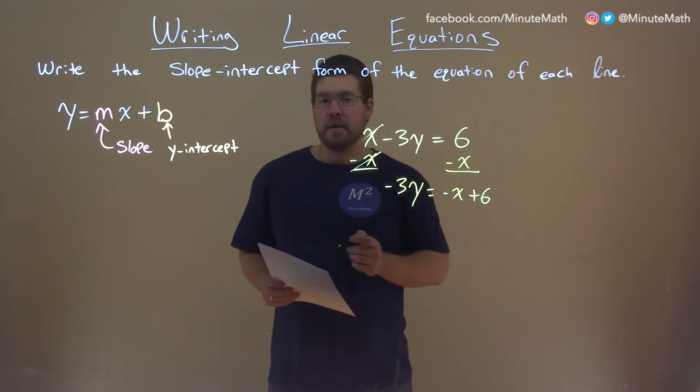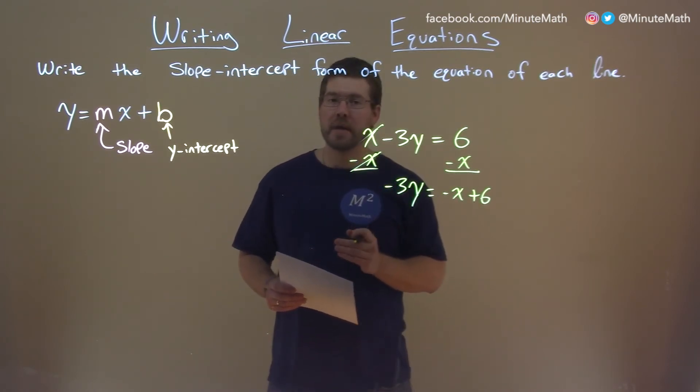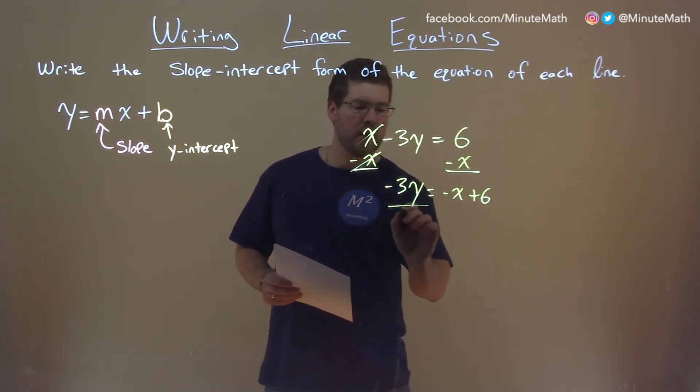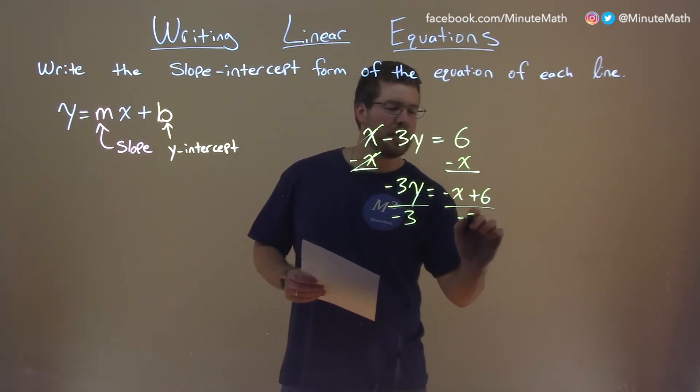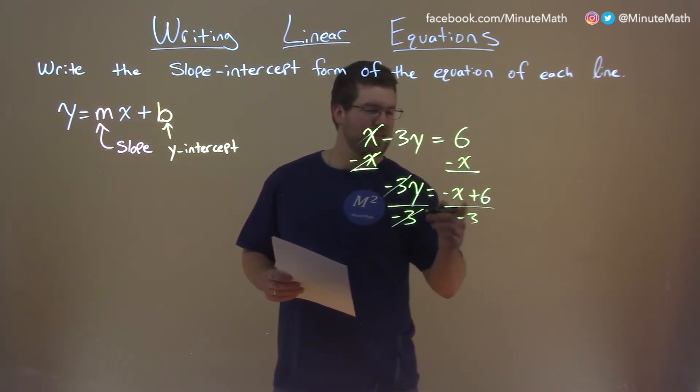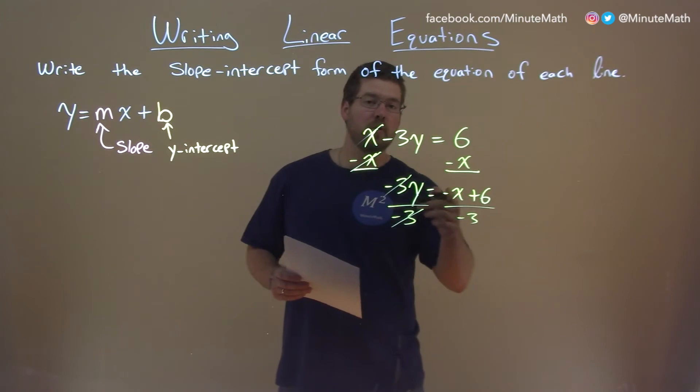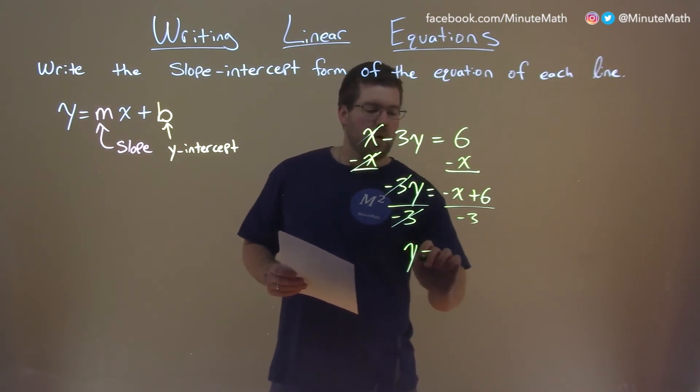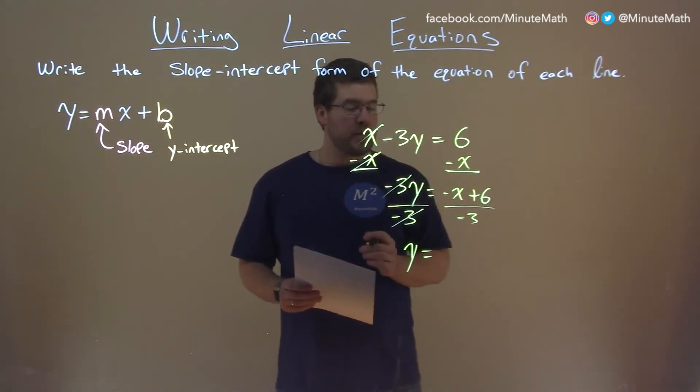Now we have negative 3 times y. Opposite of multiplication is division. Divide both sides by negative 3, and the secret here is to make sure that negative 3 goes to both parts. y is now by itself on the left-hand side.